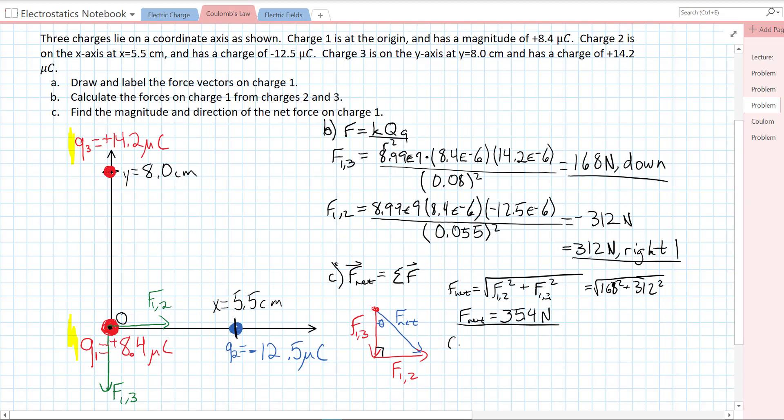And then the direction, theta, I'm just going to use inverse tan or arc tan of opposite over adjacent. So F1-2 over F1-3. That's inverse tan of 312 over 168, which equals 61.7 degrees.